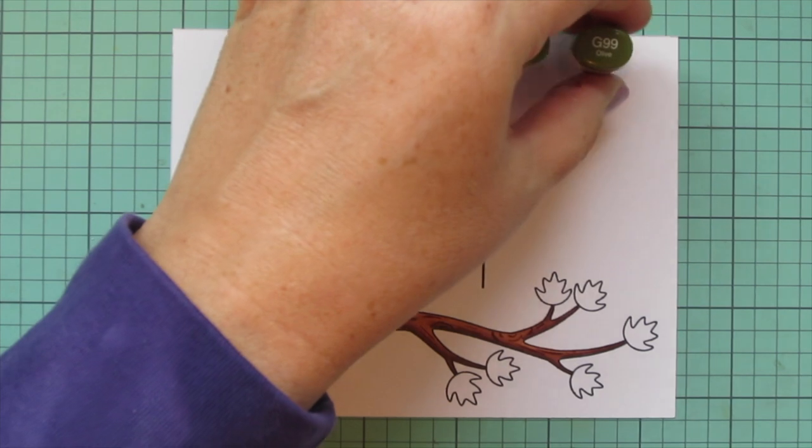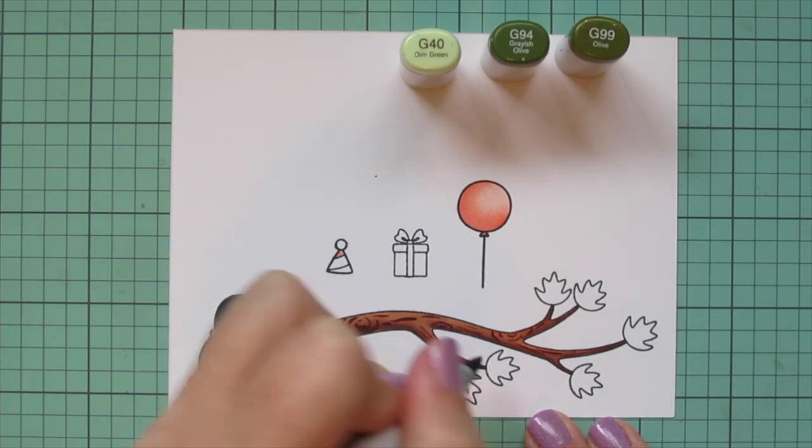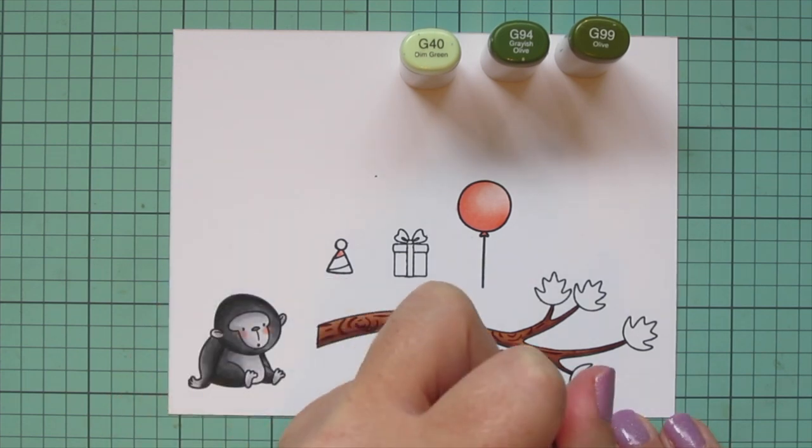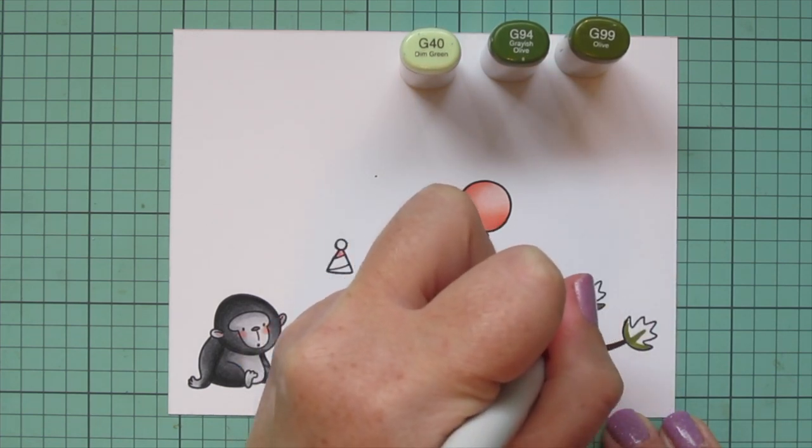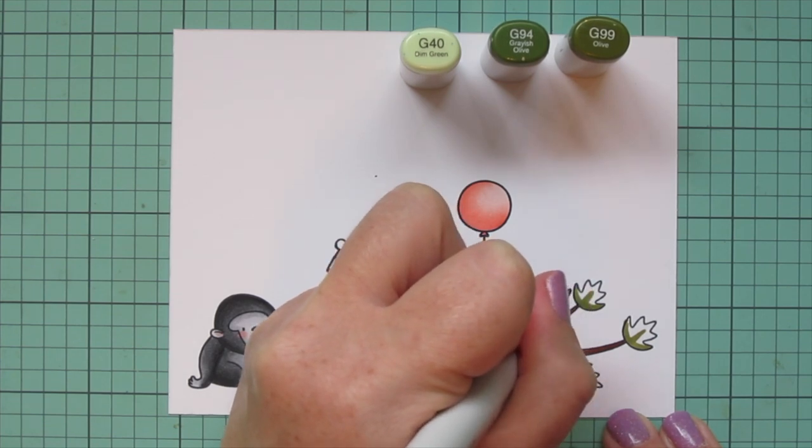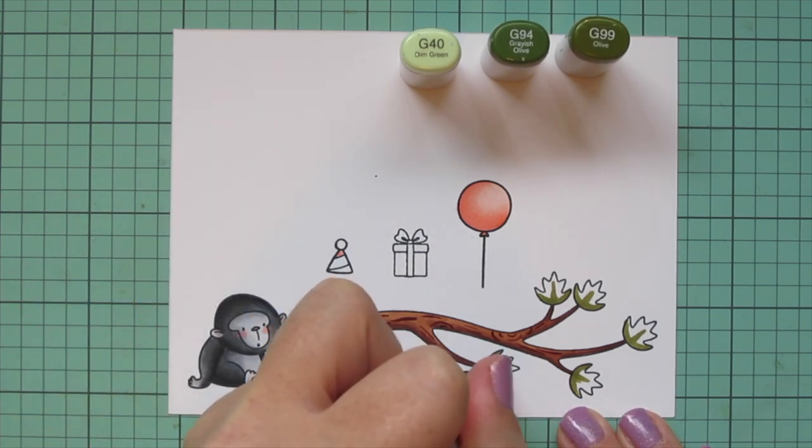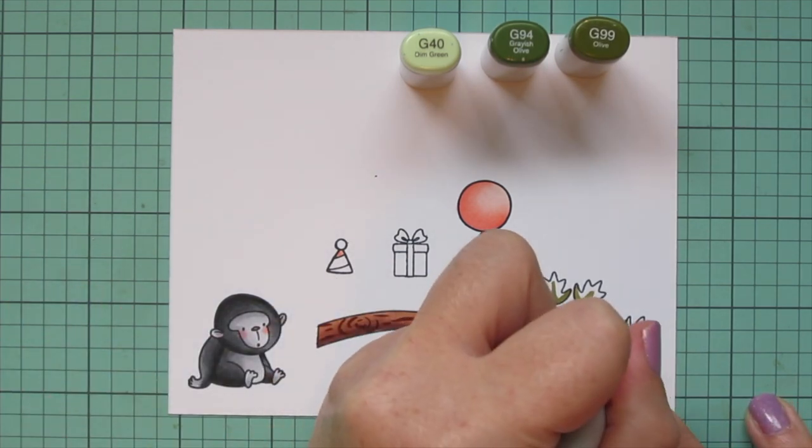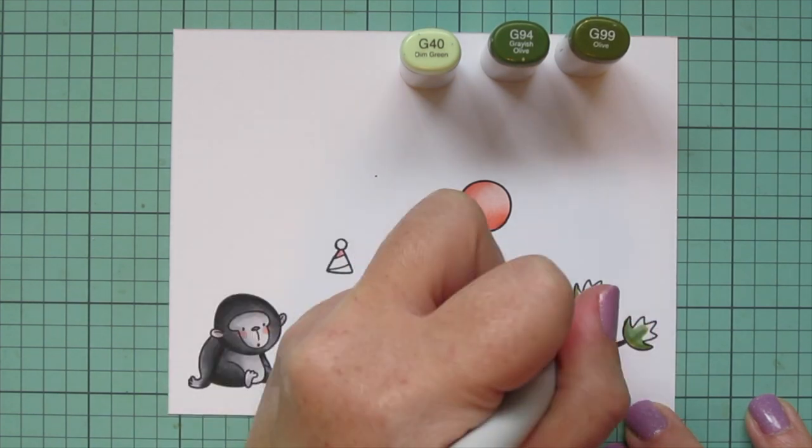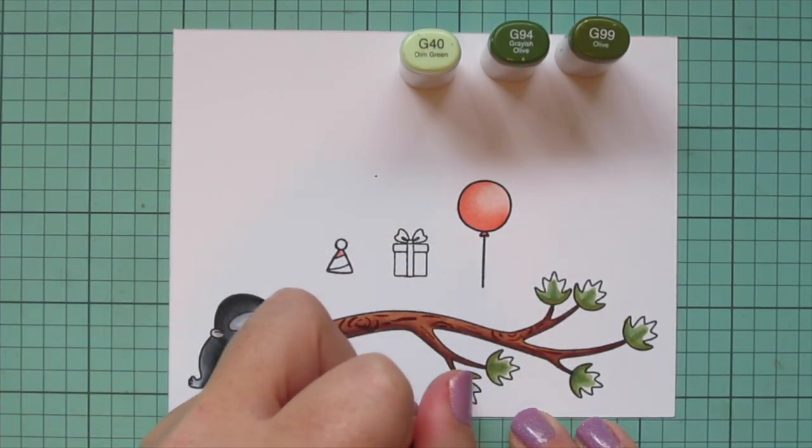For my leaves I decided to go with G40, G94, and G99. I wanted something that would stand out in contrast to the background that I'm going to be doing but also match as well so I went back and forth but ended up going with these shades. I thought the olive tones kind of went well with the rest of the images so far so I'm using that G99 at the base of each leaf and then kind of coming up the center of it and then I'm going to blend that out with the G94 and I'm saving the ends of all of the leaves for the lightest shade which is going to be the G40.